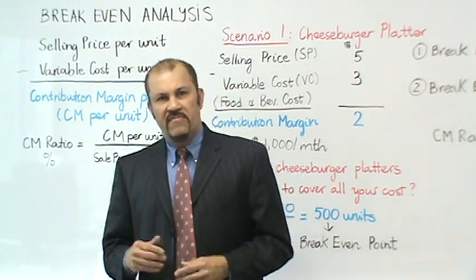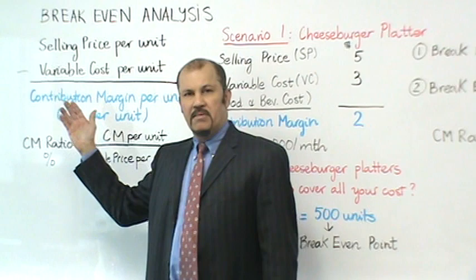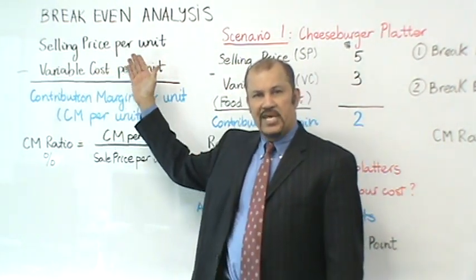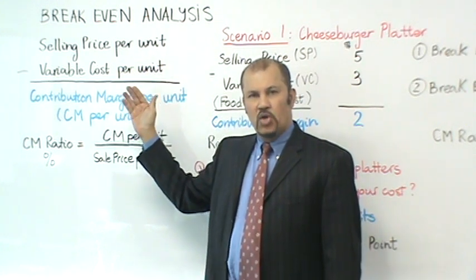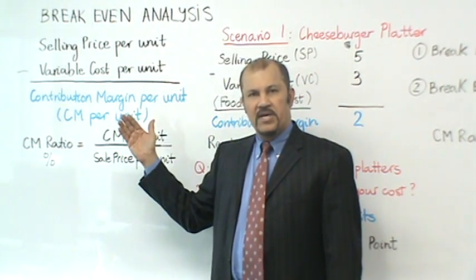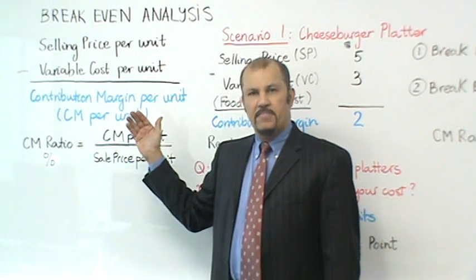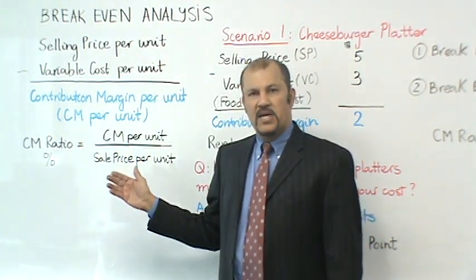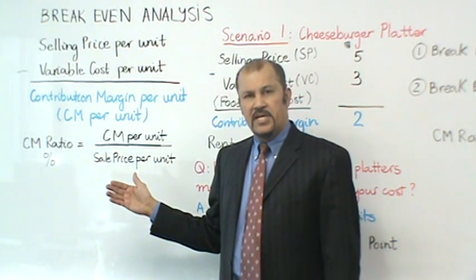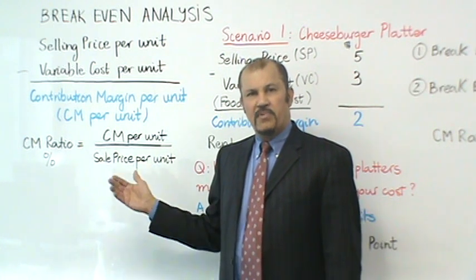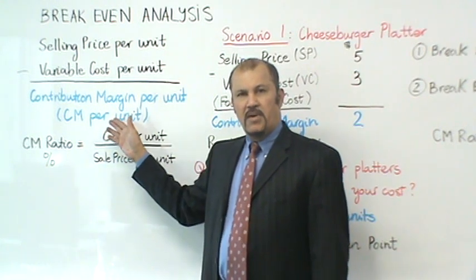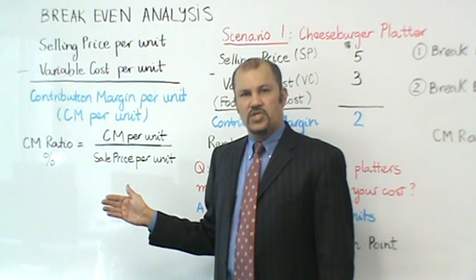Let's get right into the discussion by reviewing the formula first for contribution margin per unit. The formula for contribution margin per unit is your selling price per unit minus your variable cost per unit. Next, let's review the formula for contribution margin ratio, which is expressed as a percentage. That would be your contribution margin per unit over your selling price per unit expressed as a percentage.